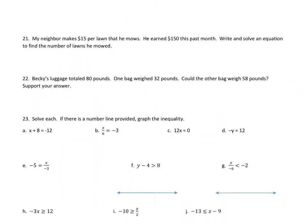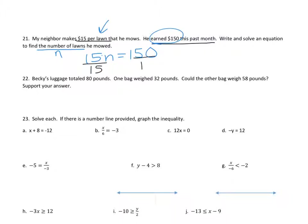My neighbor makes $15 per lawn — remember, per means multiply. He earned $150 this past month. Write and solve an equation to find the number of lawns mowed. Number of lawns is our variable. So: 15N equals 150. This is multiplying, so we divide both sides by 15. N equals 10 lawns.